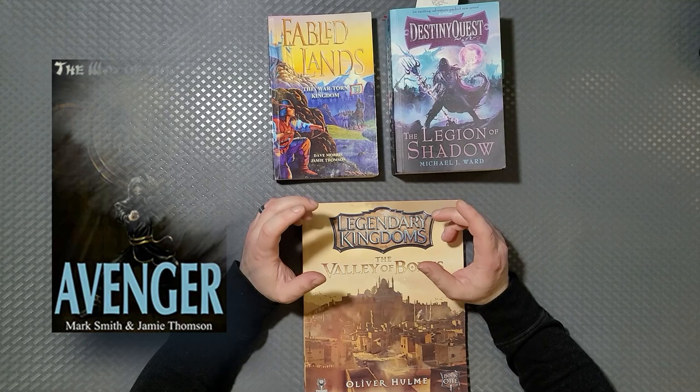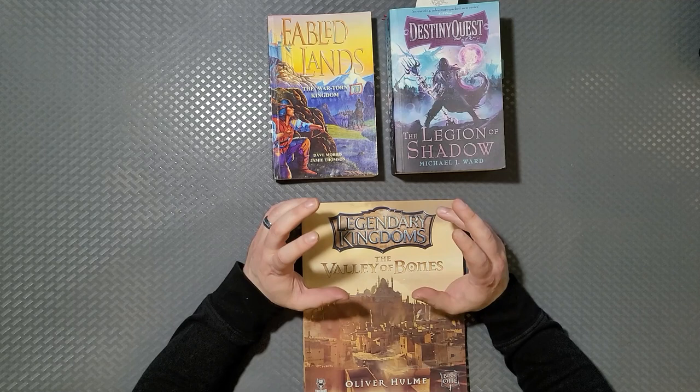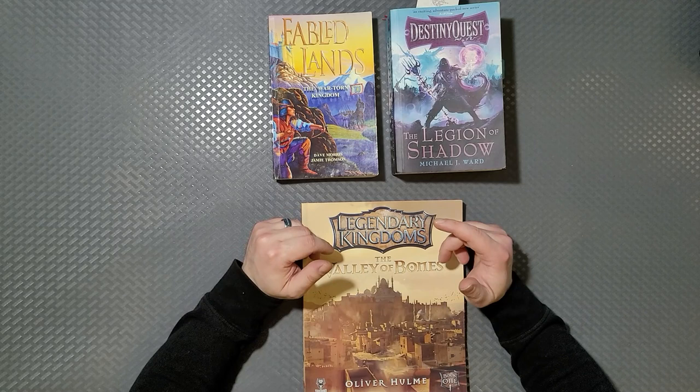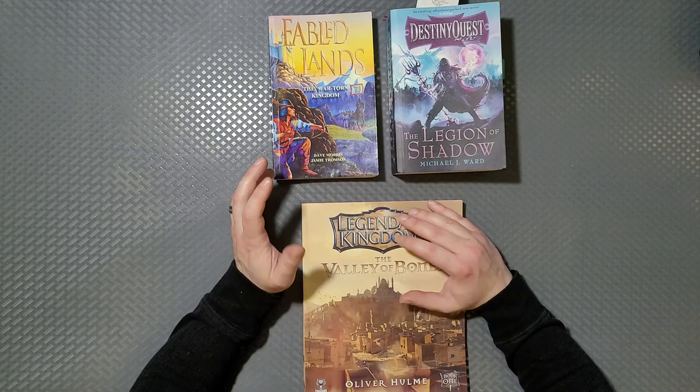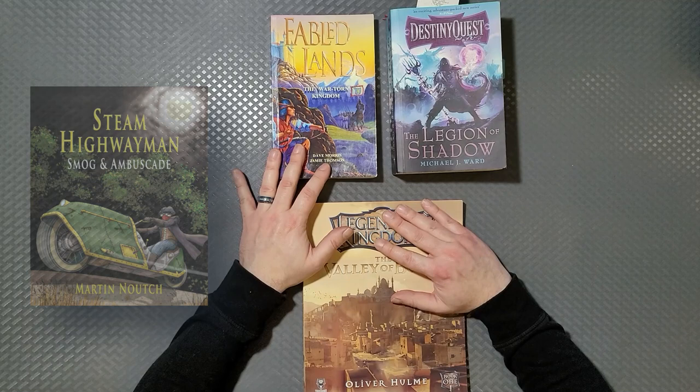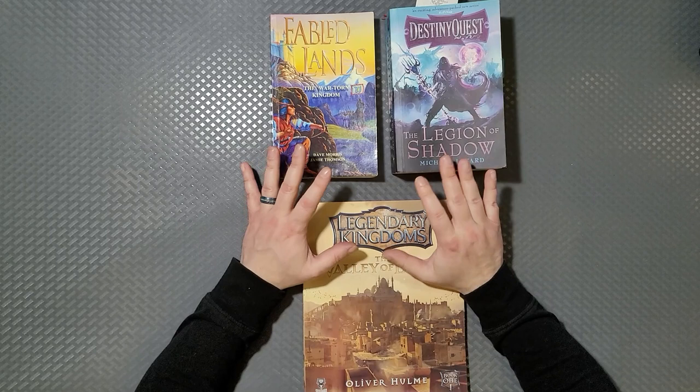You can have a little bit of both there too. So when we think semi-linear, we start thinking about Fighting Fantasy, Destiny Quest, Lone Wolf. And we start thinking about open world. We have Fabled Lands and Legendary Kingdoms. At this point, we should probably know what game books are if you're watching. If not, I will have some videos that will kind of cover game books in general later.